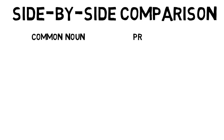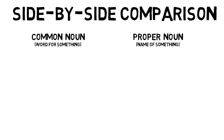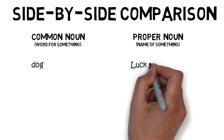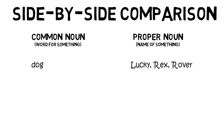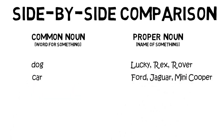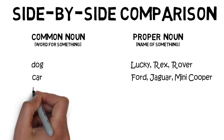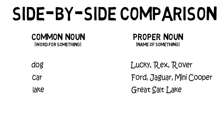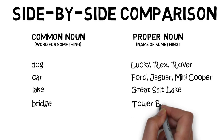So let's do a side-by-side comparison of common nouns and proper nouns. Remembering: a common noun is just the word for something — it allows us to talk about it. And the proper noun is the name of something. So we've got 'dog' — that dog might be called Lucky, Rex, or Rover. We've got 'car' — the brand of that car might be a Ford, a Jaguar, or a Mini Cooper. We've got 'lake' — Great Salt Lake, for example. A bridge — Tower Bridge, the name of a famous bridge in London.